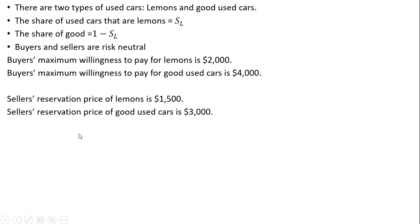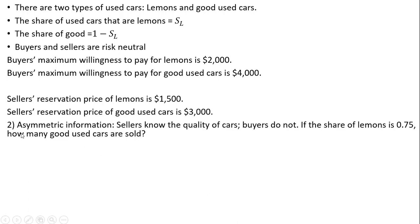Same setup as the last screen. Question two: Here we have asymmetric information. Sellers know the quality of cars, but buyers do not. If the share of lemons is 0.75, meaning 75% of the cars are lemons, how many good used cars will be sold?